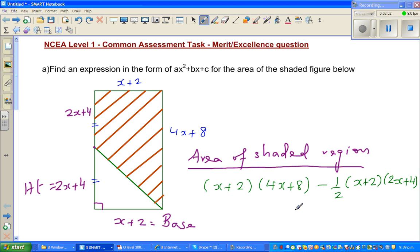This is equal to, I can factor out an (x + 2). (x + 2) is here, you can factor out, so you have (4x + 8) minus ½ times (2x + 4).